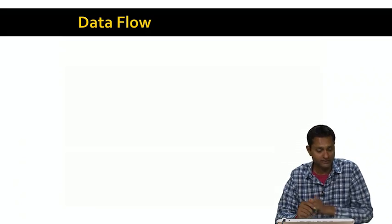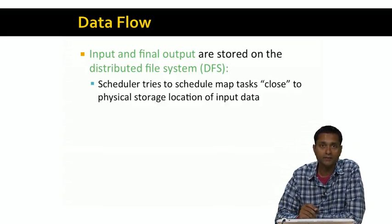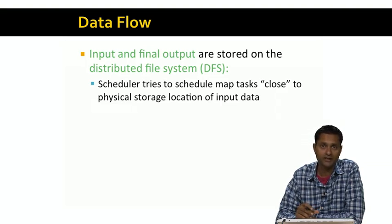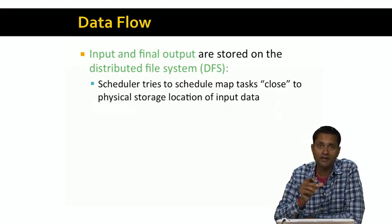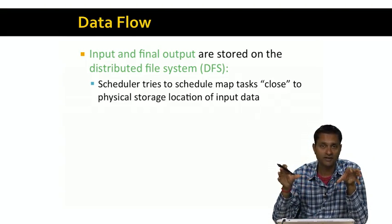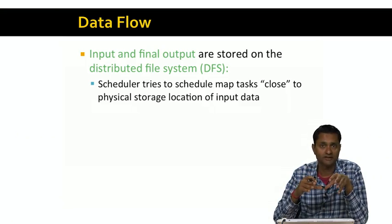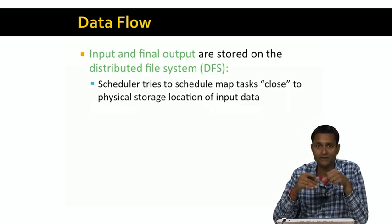Let's look at the data flow associated with MapReduce. The input and the final output of a MapReduce program are stored on the distributed file system. The scheduler tries to schedule the map task close to the physical storage location of the input data. The input data is a file divided into chunks, and there are replicas of the chunks on different chunk servers. The MapReduce system tries to schedule each map task on a chunk server that holds a copy of the corresponding chunk, so there's no actual data copy associated with the map step.